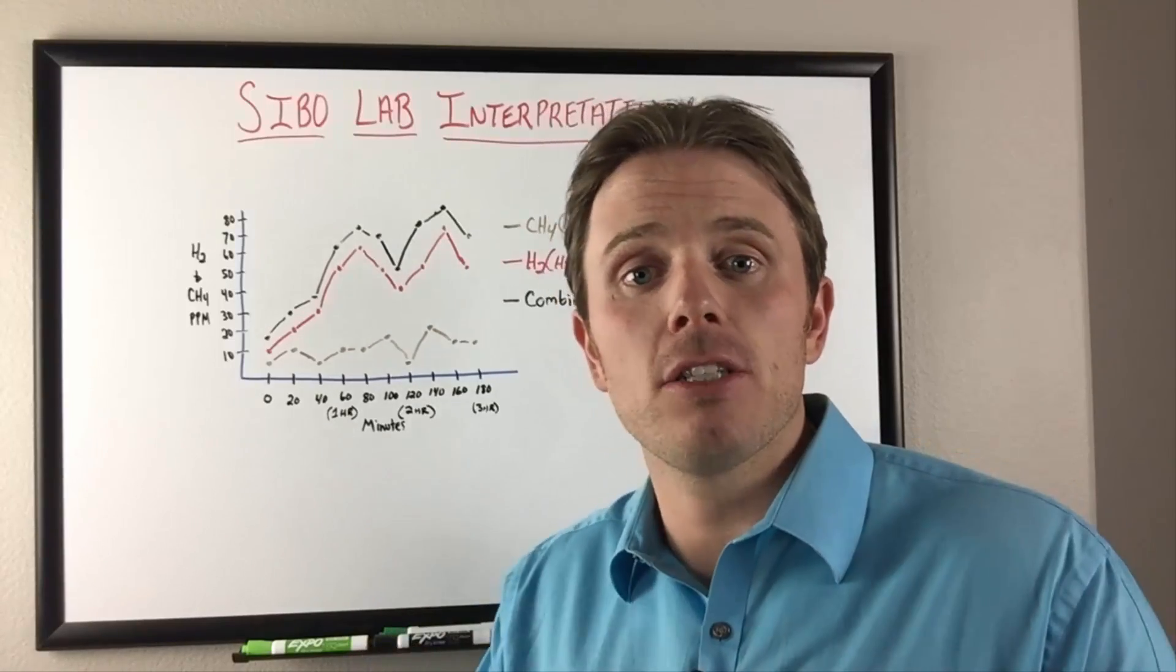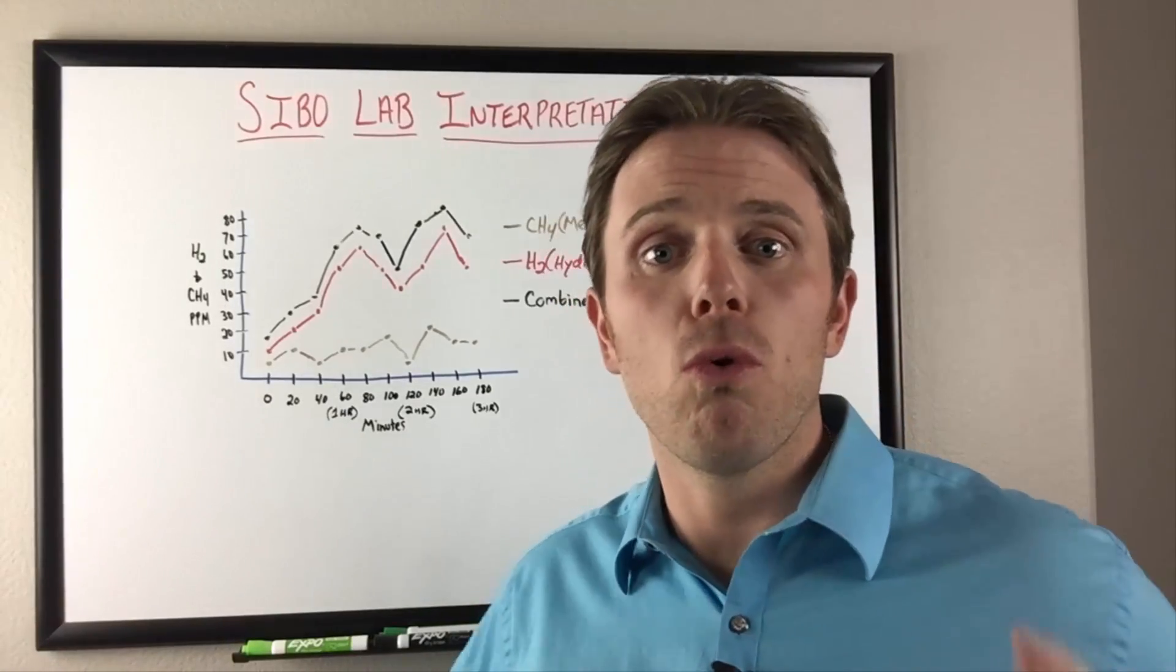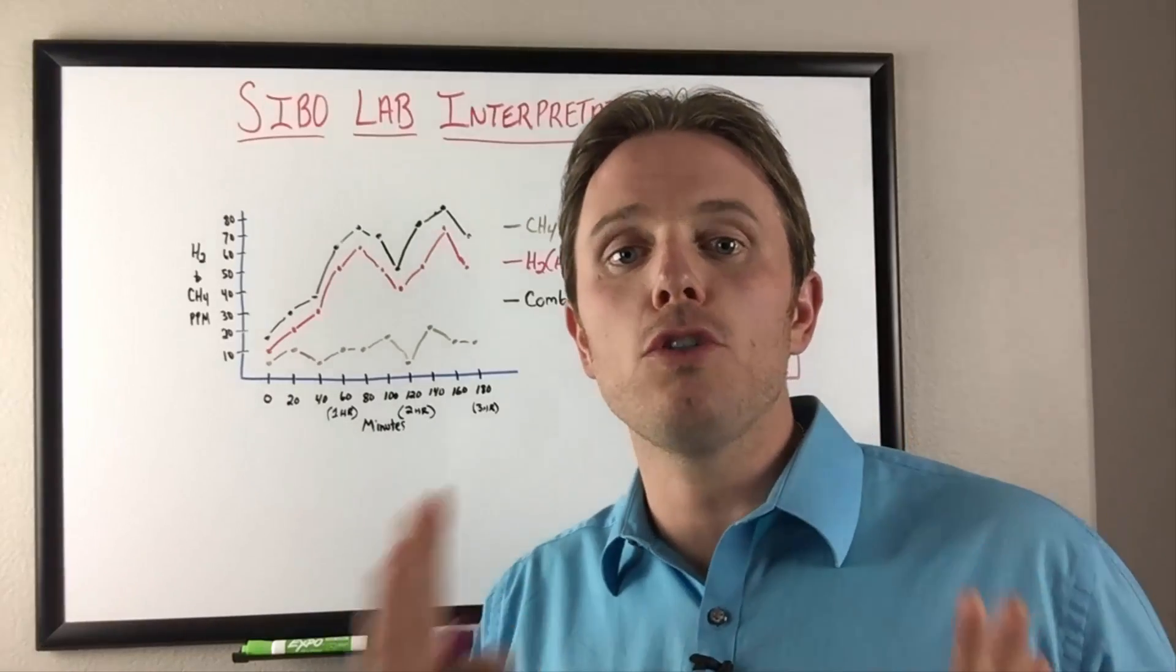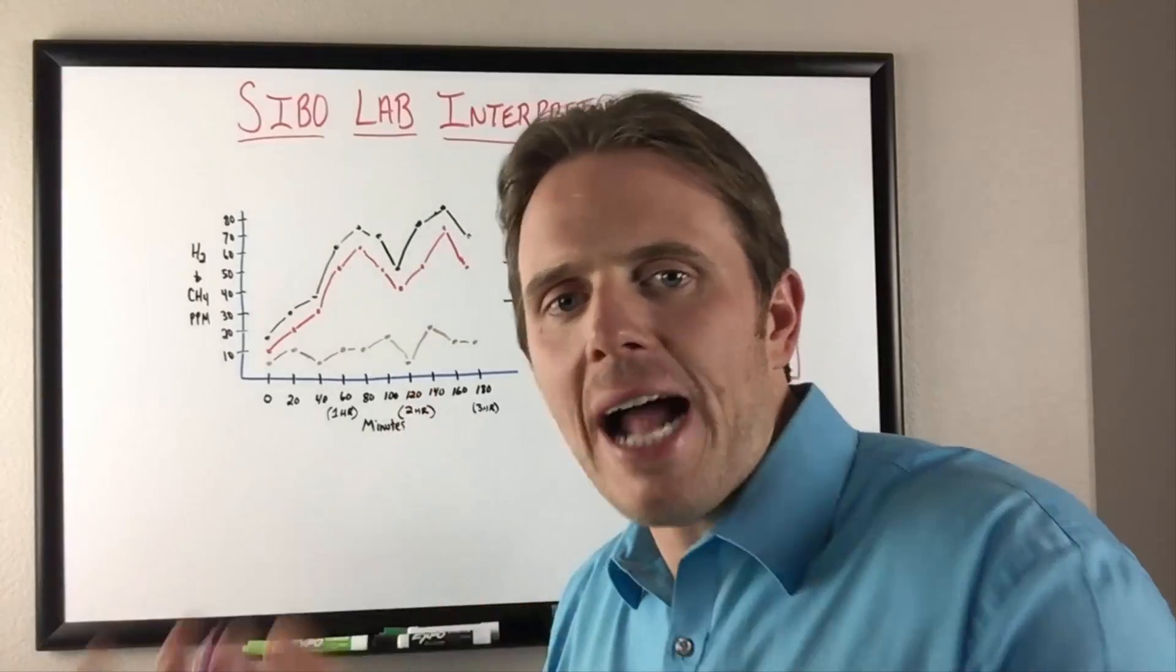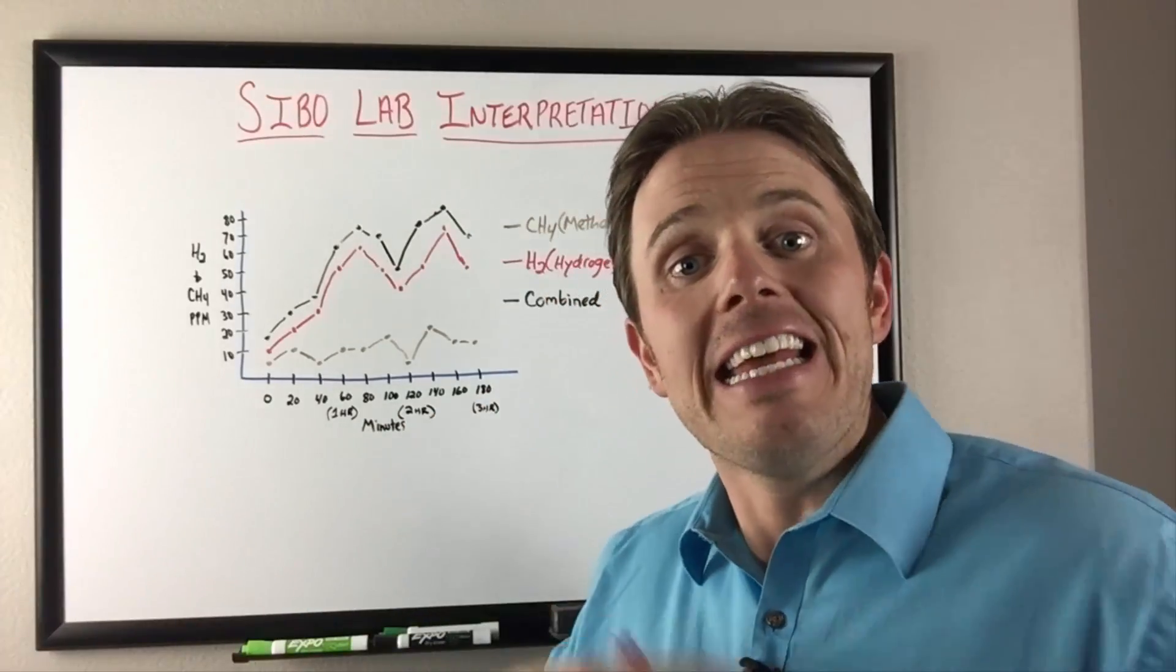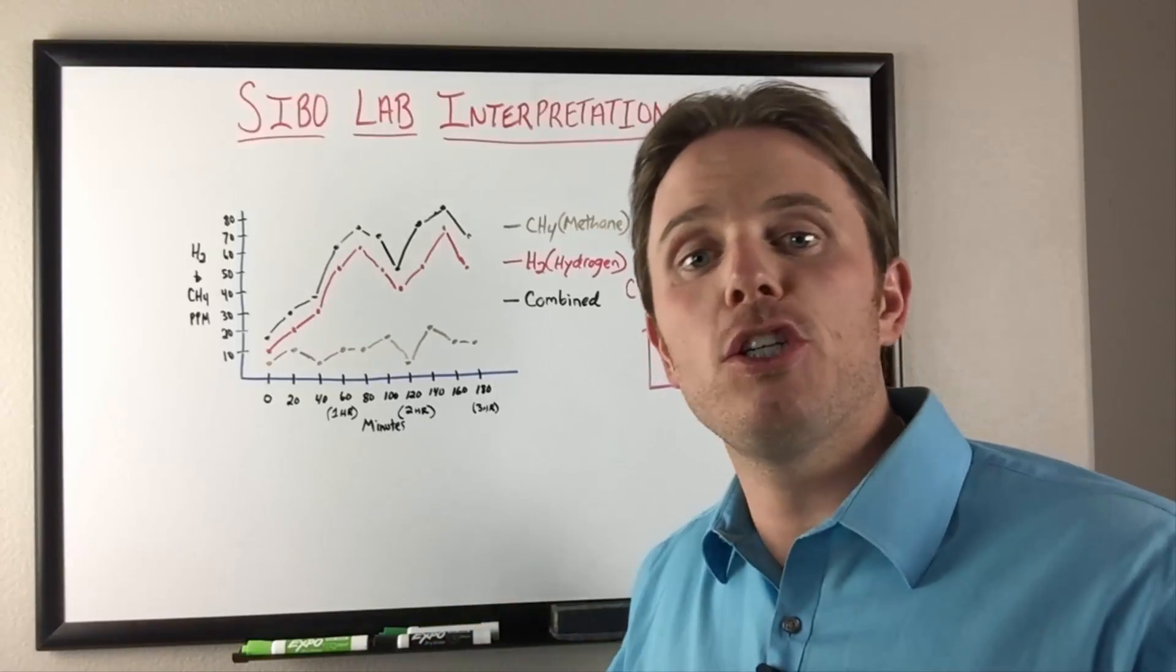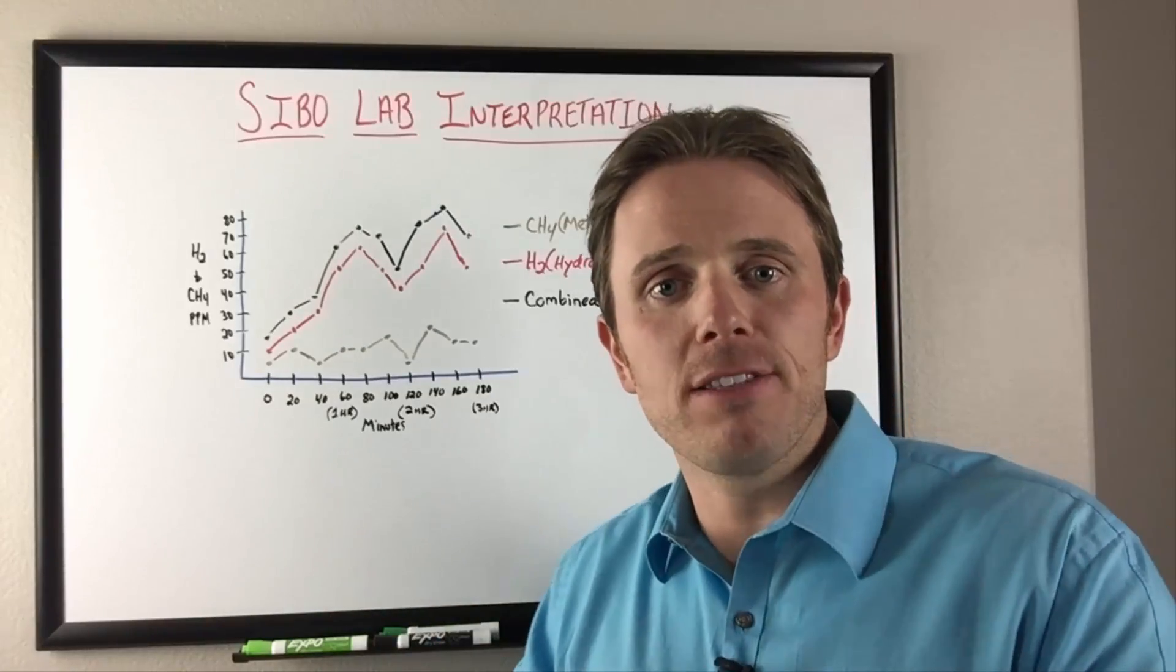There's a couple of different lab tests for SIBO. A common one is a glucose breath test that measures the first one to two feet of the intestinal tract. We also have the lactulose breath test, which looks at the later part, that 20 to 21 feet into the small intestine, the end before it transitions into the colon.